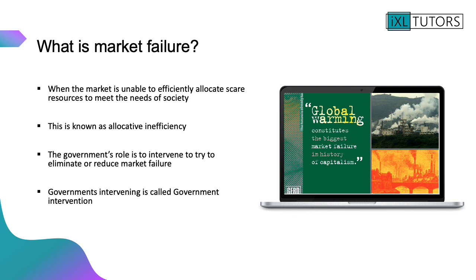Before we do that, you need to understand what market failure is. Market failure is when the market is unable to efficiently allocate scarce resources to meet the needs of society. This goes back to your first lesson in economics where you look at consumer wants, resources, and consumer welfare, and how markets can't always efficiently allocate resources to meet the needs of what everyone wants.